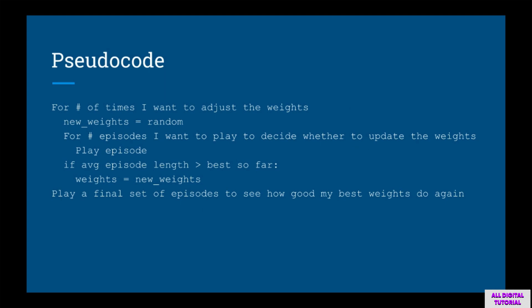Here's a quick overview of the algorithm in pseudocode. First, choose the number of times to attempt to adjust the weights. For that number of times, generate new weights randomly. Then play a number of episodes with these new weights — you need to try more than once in case an episode is really long just by chance. Calculate the average episode length. If the average episode length for these new weights is better than your best so far, keep these weights. Once done, play a final set of episodes to see how good your best weights perform.